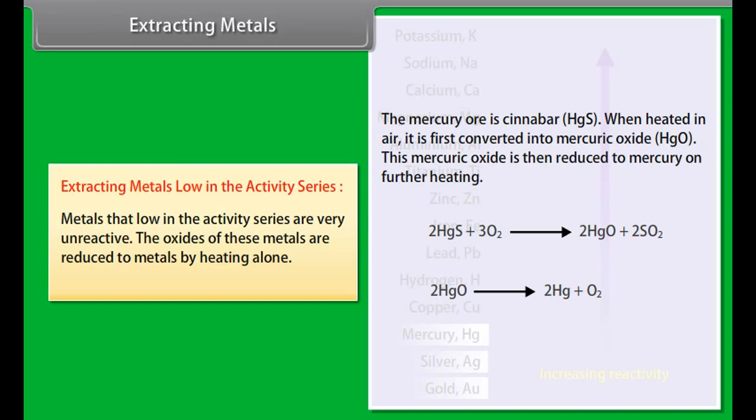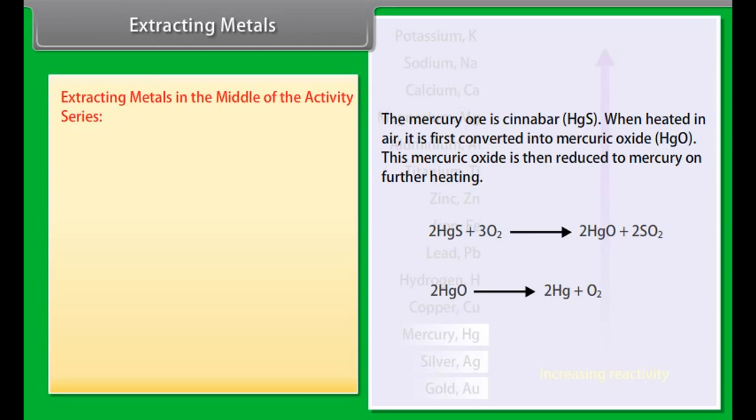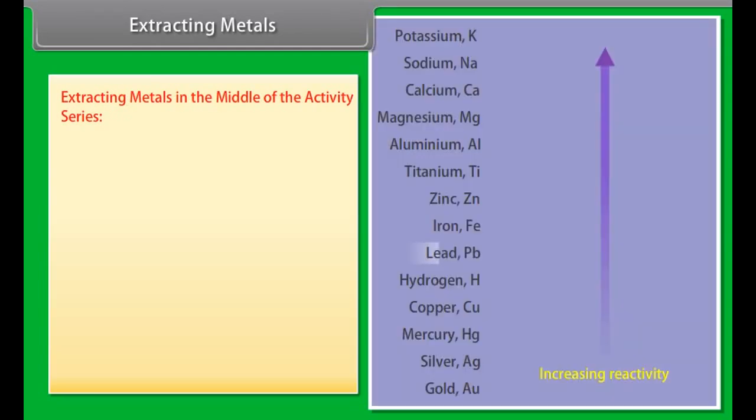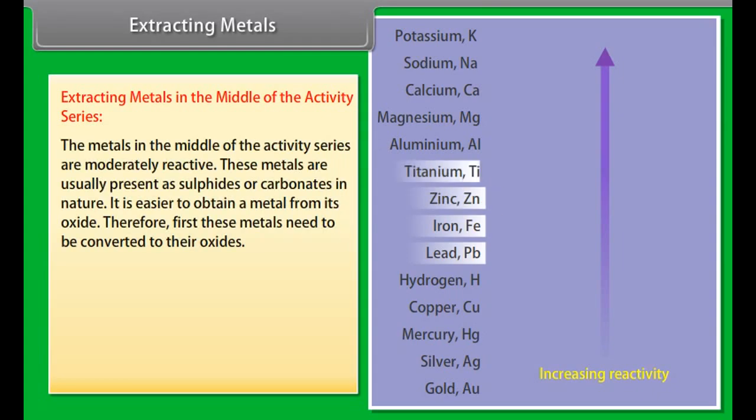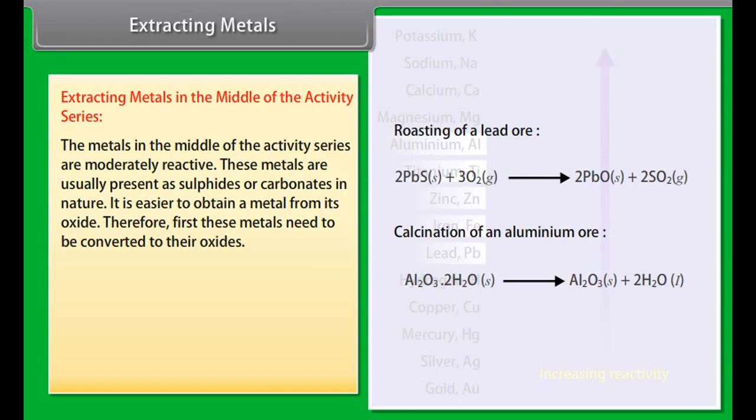Extracting metals. After the metals are separated from their ores, they are classified based on their reactivity. The following are the various categories of metals grouped as per their reactivity. Extracting metals low in the activity series. Metals that are low in the activity series are very unreactive. The oxides of these metals are reduced to metals by heating alone.